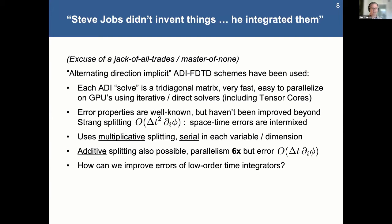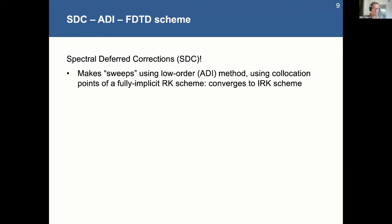And I think all of you know that spectral deferred corrections is a great option for that. So SDC makes sweeps through using a low-order method. That's actually taking steps on collocation points for some fully implicit Runge-Kutta scheme. And if you take enough sweeps through, you'll actually converge to round off to the fully implicit RK scheme.